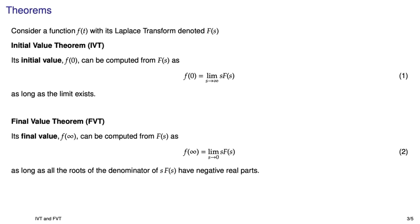The final value theorem has a very similar look to it. The value of f at infinity, or its final value, is equal to the limit as s goes to zero of s times F(s). But this theorem only applies if the roots of the denominator all have negative real parts. The trick here is that you have to form s times F(s), cancel out all the s's in the numerator and denominator that you can possibly cancel, and then check the roots of the denominator of s times F(s).